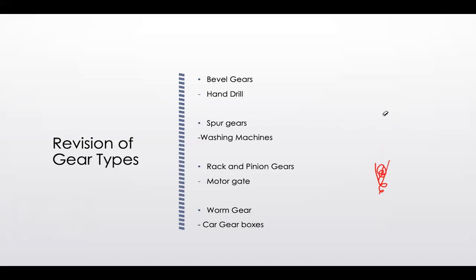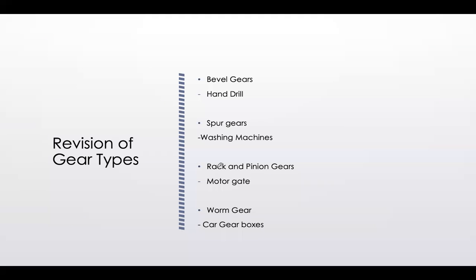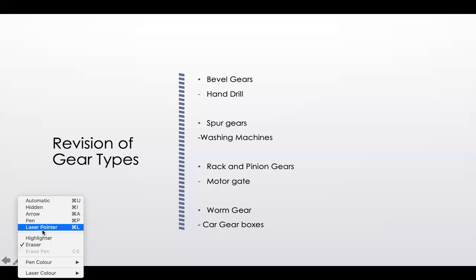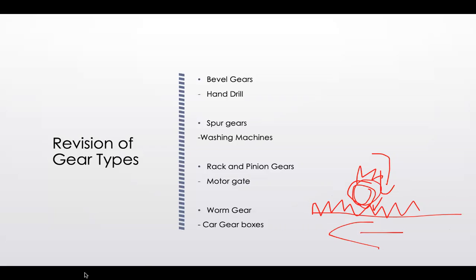Spur gears are our normal everyday gears. We also get rack and pinion gears — on a motor gate, for example, they convert rotational movement into linear movement. A rotating spur gear meshes with a toothed rail, pulling it left or right to open and close gates.